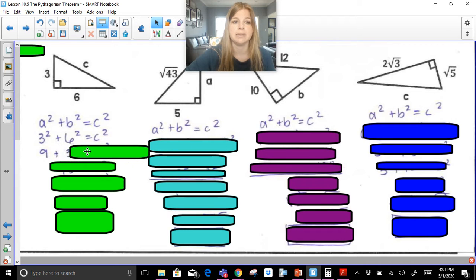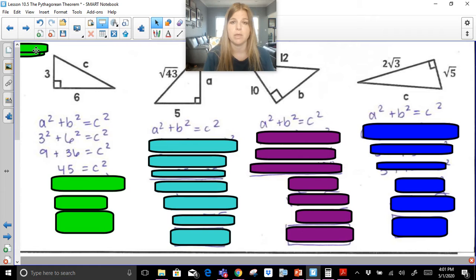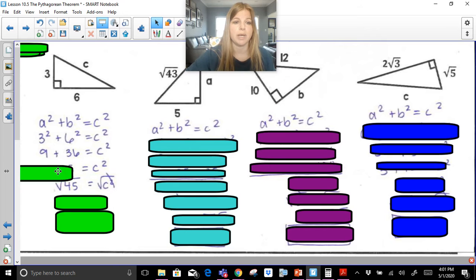3 squared is 9, 6 squared is 36. We're going to add those together, 9 plus 36 is 45, and 45 equals C squared. Now, to solve for C, we know the opposite operation of squaring something is to take the square root. So I'm going to take the square root on both sides, and taking the square root of a squared, they're opposite operations, they cancel each other out.